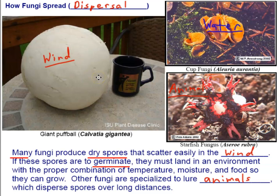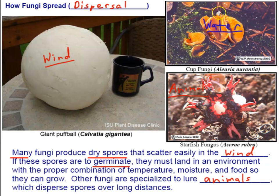One mode of spore dispersal is wind, another is water. There are fungi known as cup fungi — named because the fruiting bodies form a cup shape. The cup is lined with sporangia producing spores. When it rains, water droplets fall into the cup and splash the spores out. It doesn't disperse as far as wind, but it's enough to get spores away from the parent fungus, and if they land in suitable soil they'll germinate and grow into a new individual.